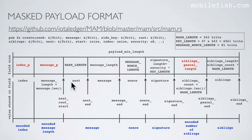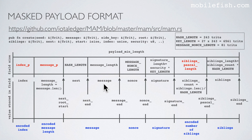If you go through the create function line by line you might find this drawing helpful to understand the code. This is the mask payload format. These are the field sizes and these are the values stored in the fields. The encoded index is stored in this field, the encoded message length is stored in this field, the message containing the next root and the actual message is stored in this field, the nonce is stored in this field, and the signature is stored in this field.